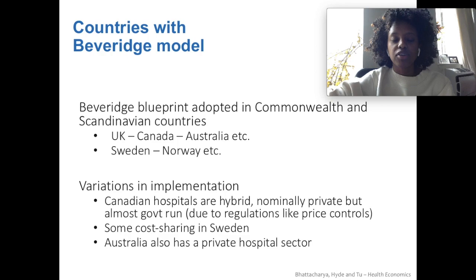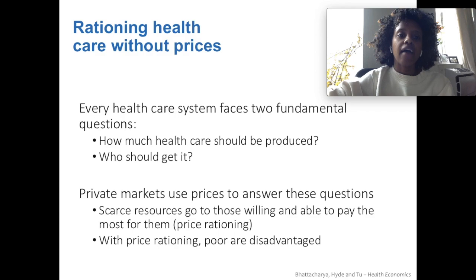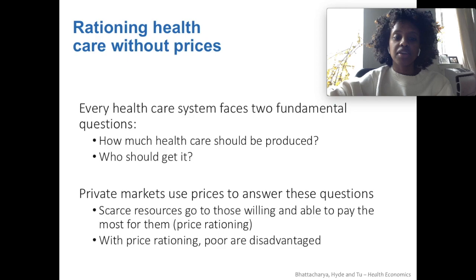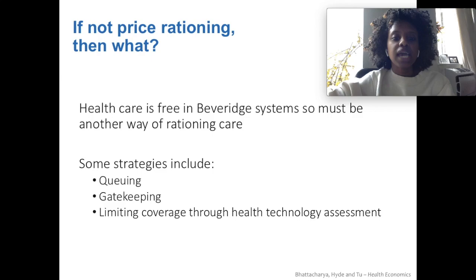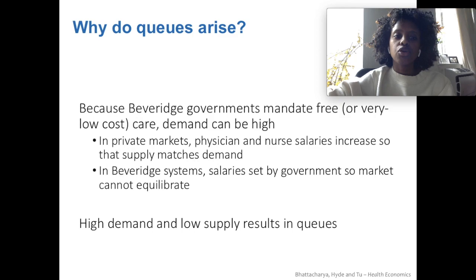Sweden has some cost-sharing, and Australia has a private hospital sector. But as a rule for the Beveridge model, they have to ration their care, but not on the basis of price. Every healthcare system faces two fundamental questions: how much care is going to be produced, and who is going to get it. Private markets use prices to answer those questions — scarce resources are allocated to those most willing and able to pay, so price-based rationing. But this disadvantages the poor. So in the Beveridge system, instead of price rationing, they make all healthcare free but use other strategies like queueing wait times, gatekeeping, and health technology assessment.